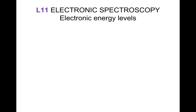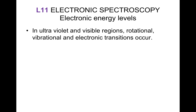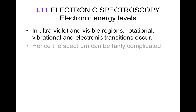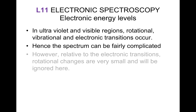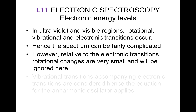Electronic energy levels lie in the ultraviolet and visible regions. Rotational, vibrational, and electronic transitions do occur, hence the spectrum can be fairly complicated. However, relative to the electronic transitions, rotational changes are very small and will be ignored in this case.